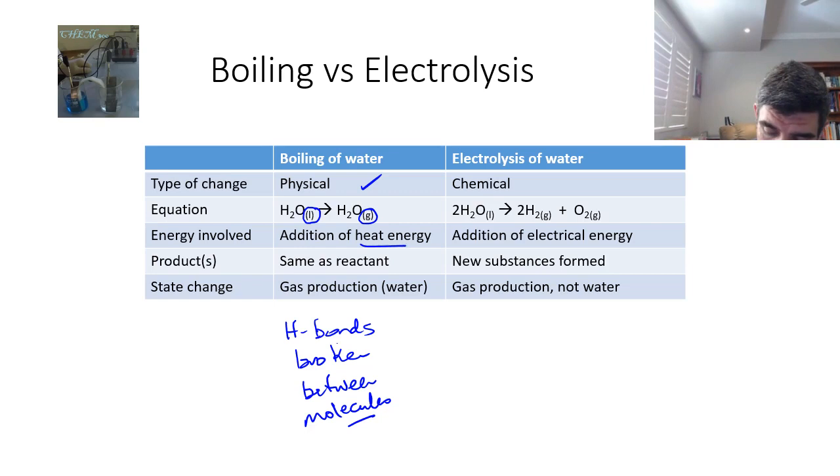We need to add heat energy. So if we're going to boil this, we know that the boiling point of water is 100 degrees C. And so therefore we know that we're going to have to put a lot of heat energy in, in order to get that water to convert into water gas or water vapor.